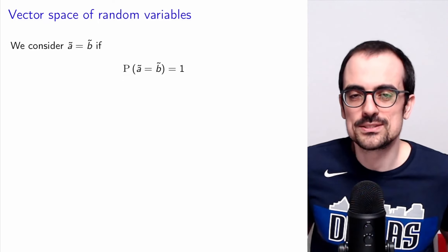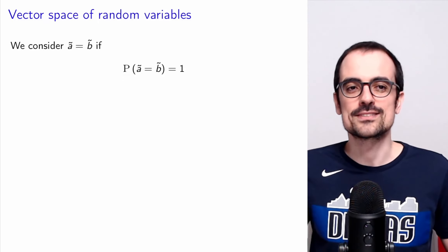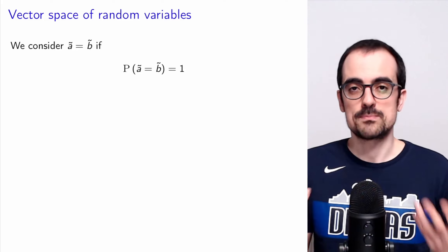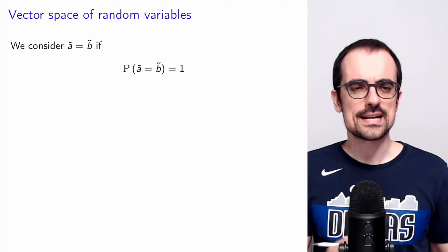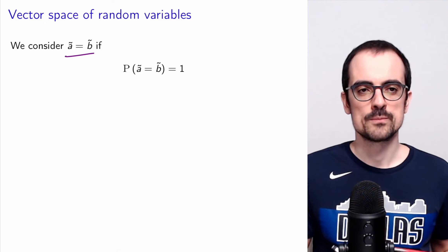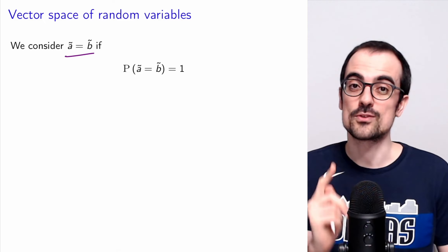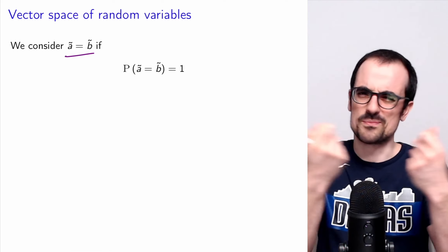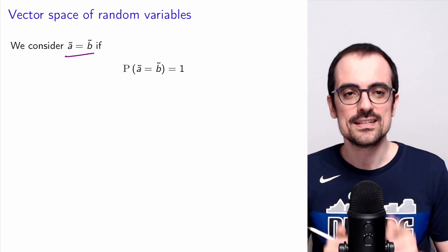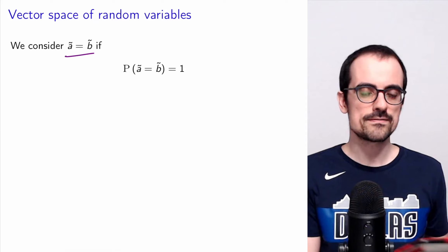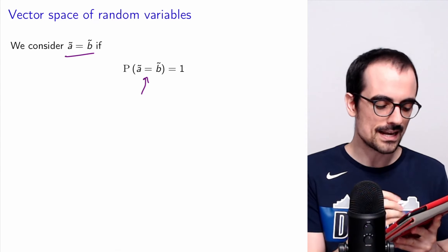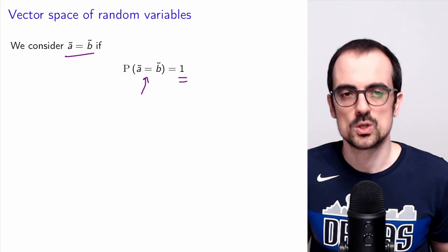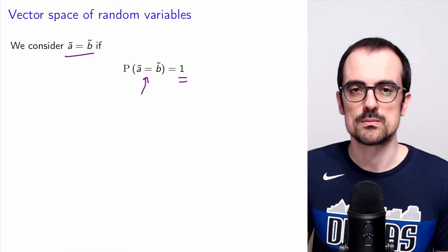It turns out that random variables actually are a vector space. In order to establish that, we have to define when a random variable is equal to another random variable. It's not sufficient for them to have the same distribution, because two independent random variables can have the same distribution without being the same. Instead, we're going to say that two random variables are the same if the event that they take the same value has probability one — with probability one, A is always equal to B.